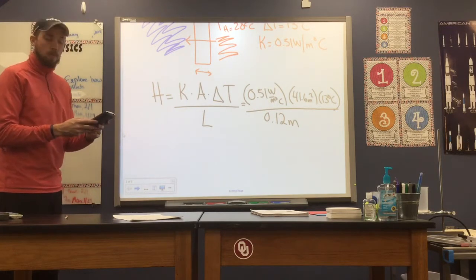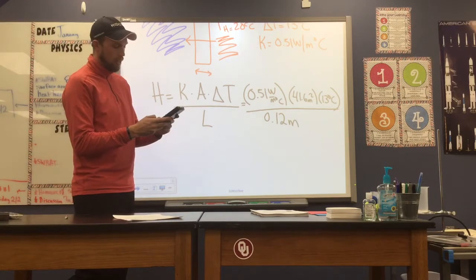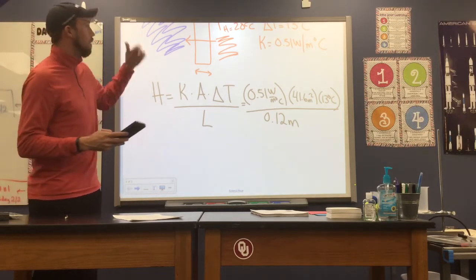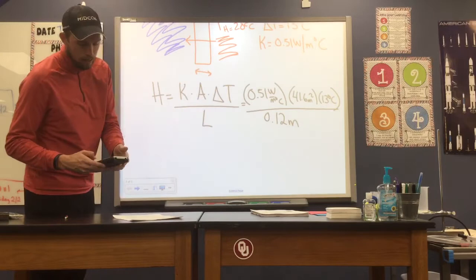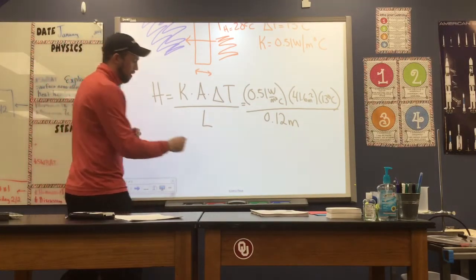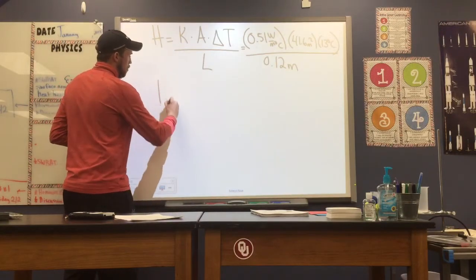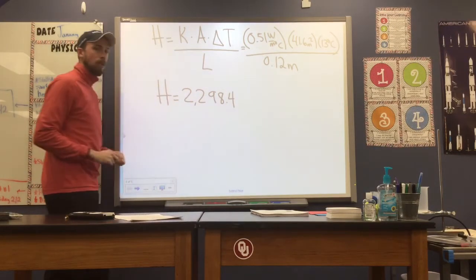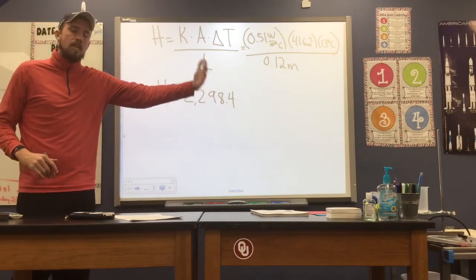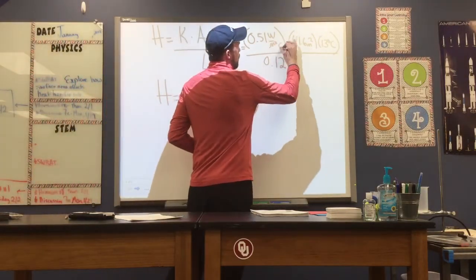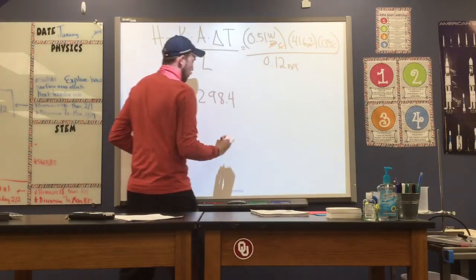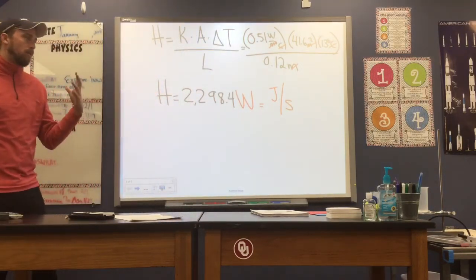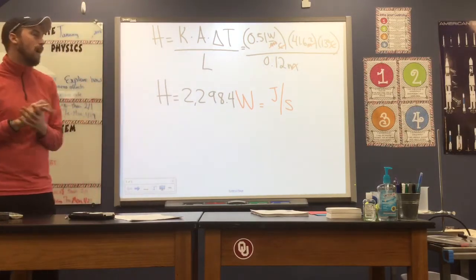So our thermal conductivity, 0.51, times our contact area, 41.6, times our temperature difference, 13 degrees. And then we'll divide by the length of our wall, or the length of the heat's passing, the thickness of our wall. And when we do that, I get right at about 2,298, 2,298.4. And as we've been working through our heat transfer rate, remember, this is a measurement of heat moving in a given amount of time. So in our equation, the meters and degrees Celsius will cancel out, we'll be left with watts, or joules per second. And that per second is important, because we're asked for the heat passing through in a set amount of time here.